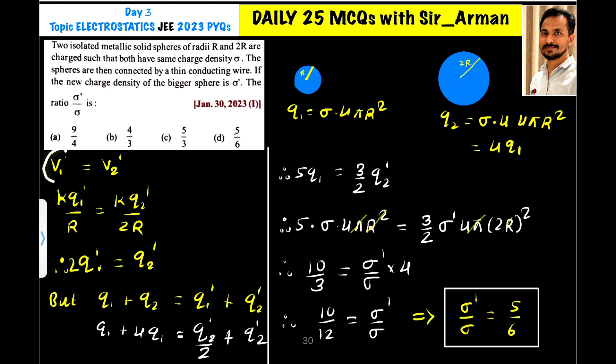In that case, the new potential V1 dash of first equals the potential of the second sphere. Now equation for the electric potential is kq by r.